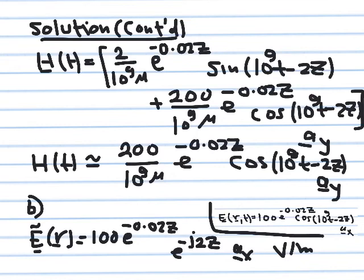Reorganizing in this slide, I integrate relative to time. The cosine integrates to a sine and you divide by 10^9; the sine integrates to minus cosine and you divide by 10^9. The negatives cancel, so both terms become positive. Looking at the amplitudes: 2/10^9 μ versus 200/10^9 μ — this expression is 100 times larger than the other.